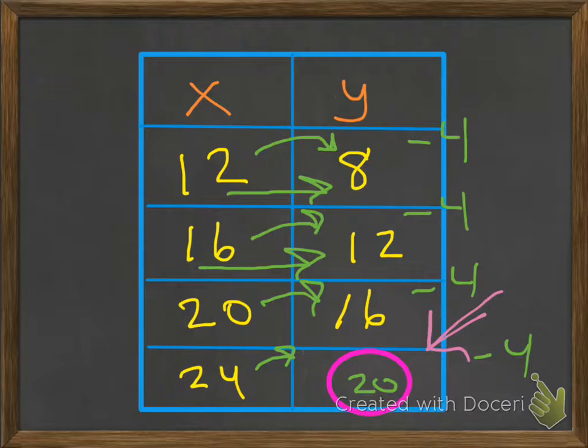So what's our rule? Our rule is y equals x minus 4. That's our rule. And if we plug that in every single time, no matter what the x is, if we follow it, we're going to get our y.